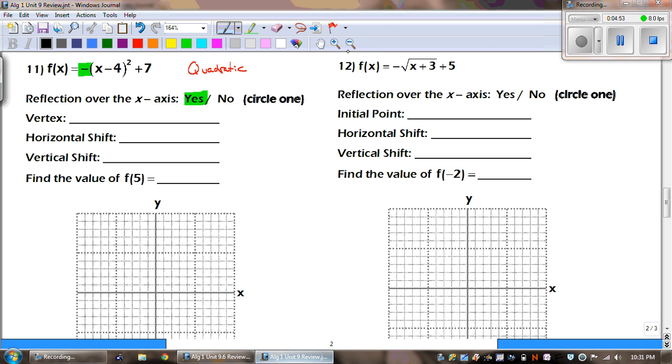What's our vertex? Once again, we take the opposite of what's inside. I'm kind of losing it. It's 4. And then the outside stays the same. So that horizontal shift tells me that I need to go right 4. And the vertical shift is up 7.